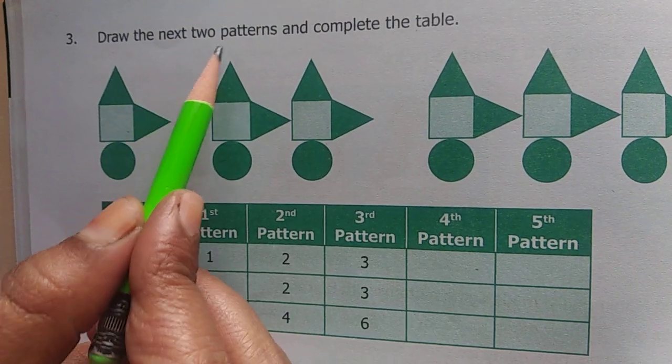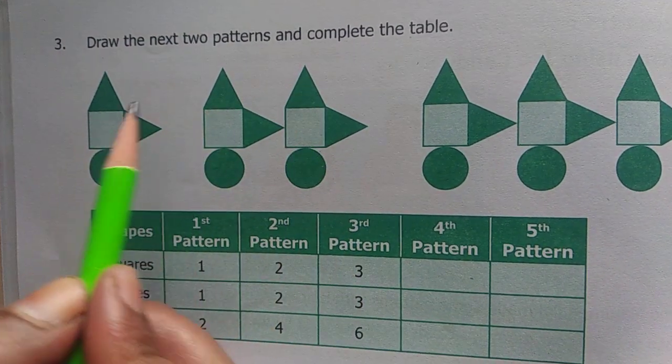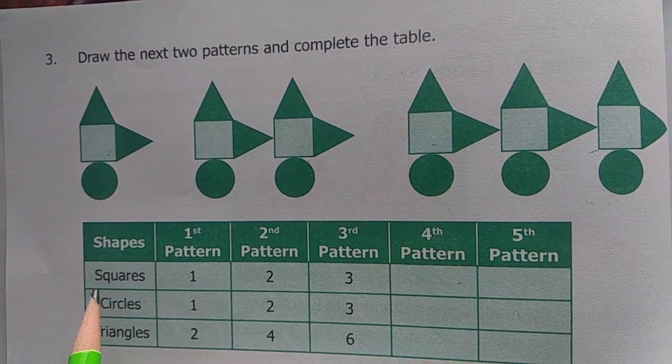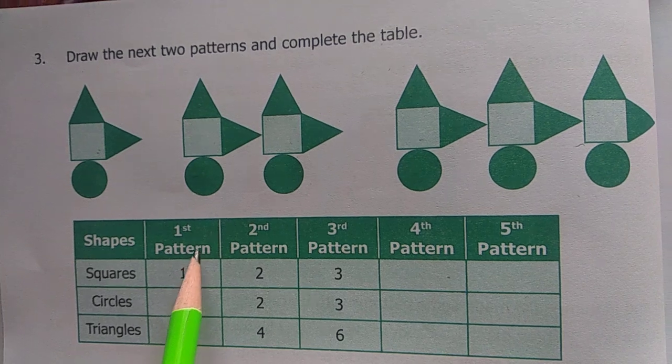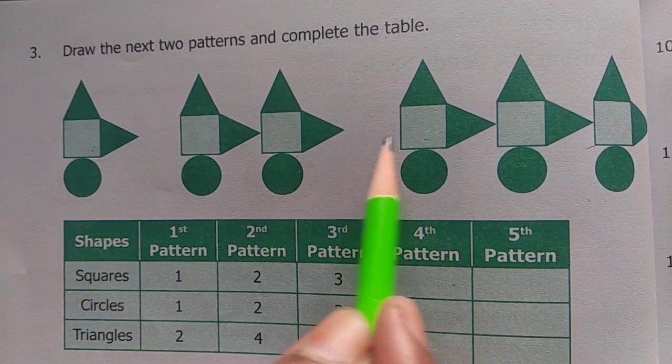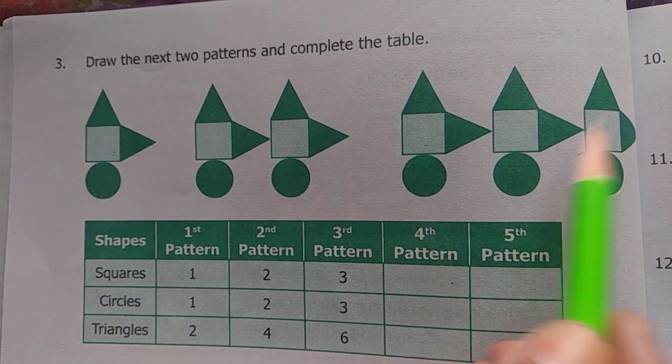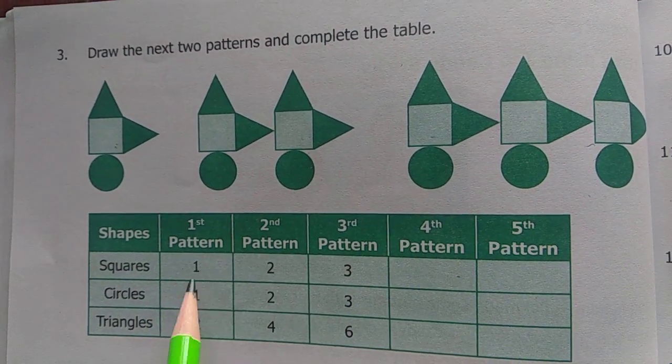Draw the next two patterns and complete the table. Now here are 1, here are 2, here are 3. So here are shapes. First, second, third, fourth, fifth. Now these are same pictures. This one you draw and complete it. Now 3 is the next 4, 5 you draw and complete it.